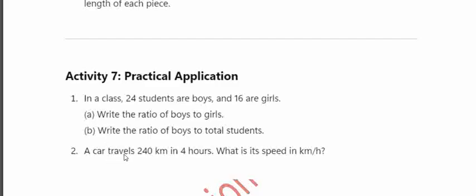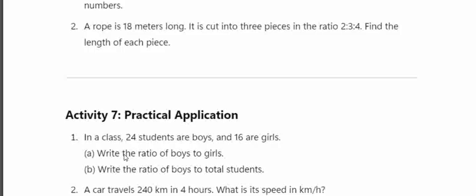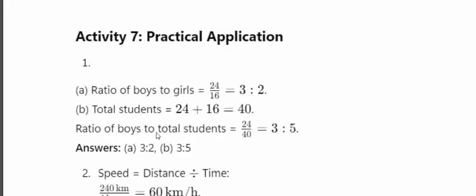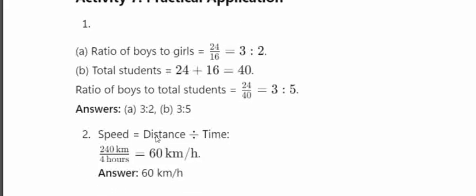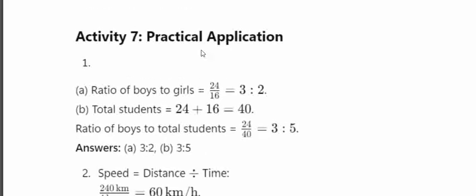A car travels 214 km in 4 hours. Find the speed in km per hour. Speed equals distance divided by time: 214 divided by 4 gives approximately 53.5 km per hour.